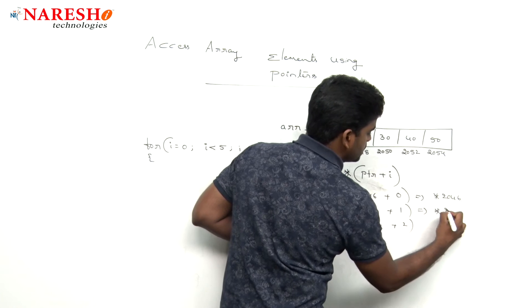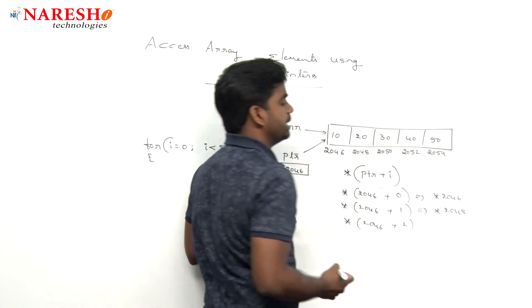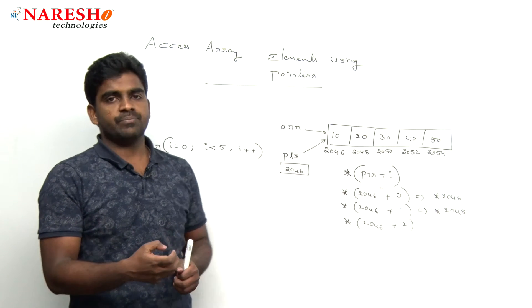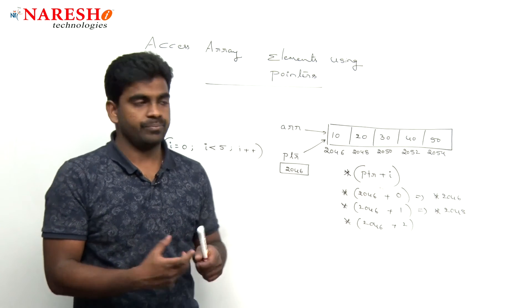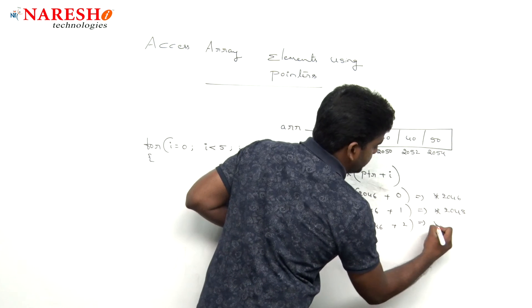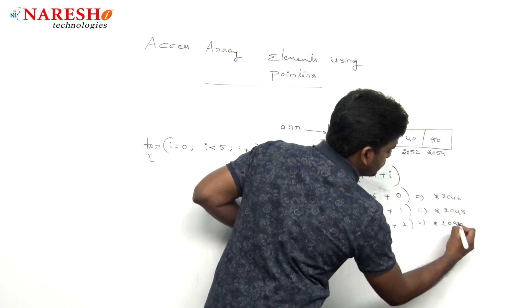But 2046 plus 1 means 2048, it is increased by 2 bytes. In the last video we have seen how the pointer modifies. Here it is 2050.